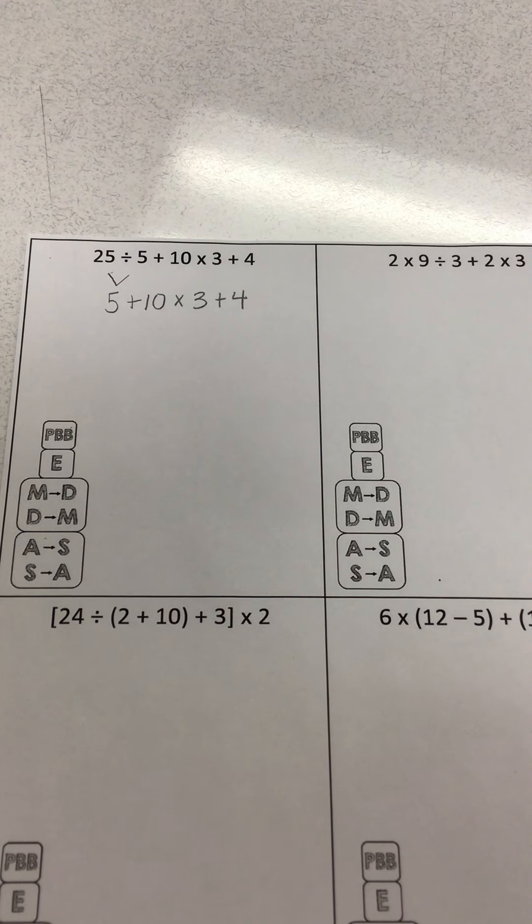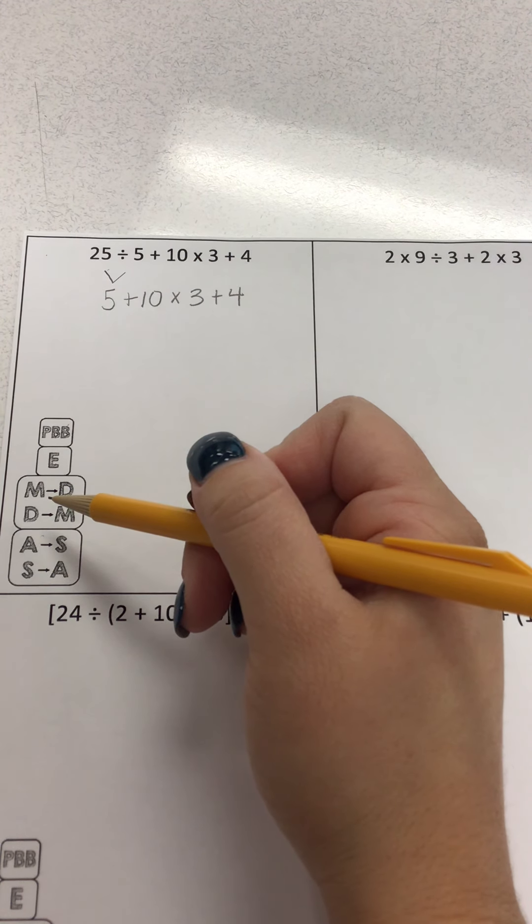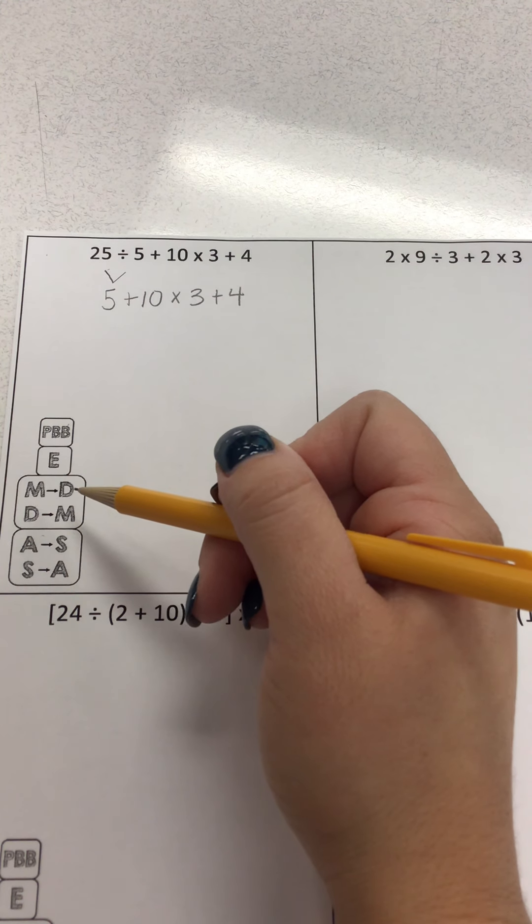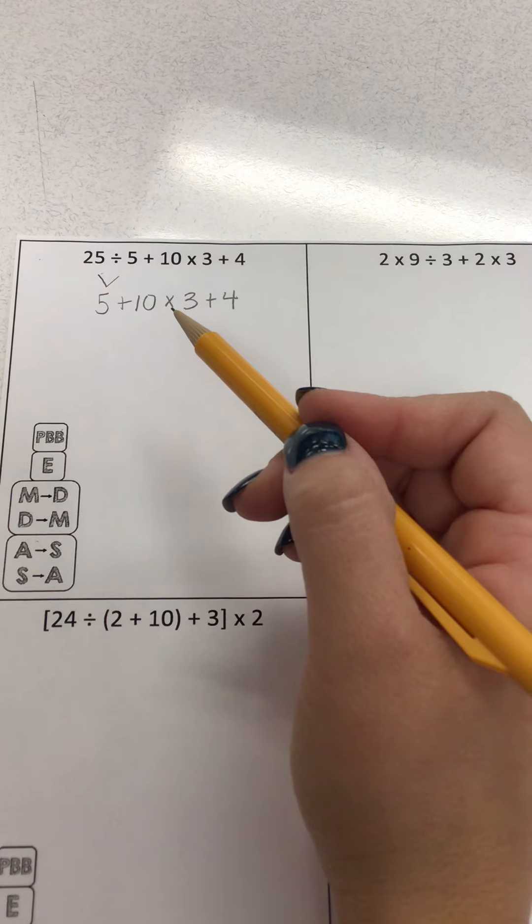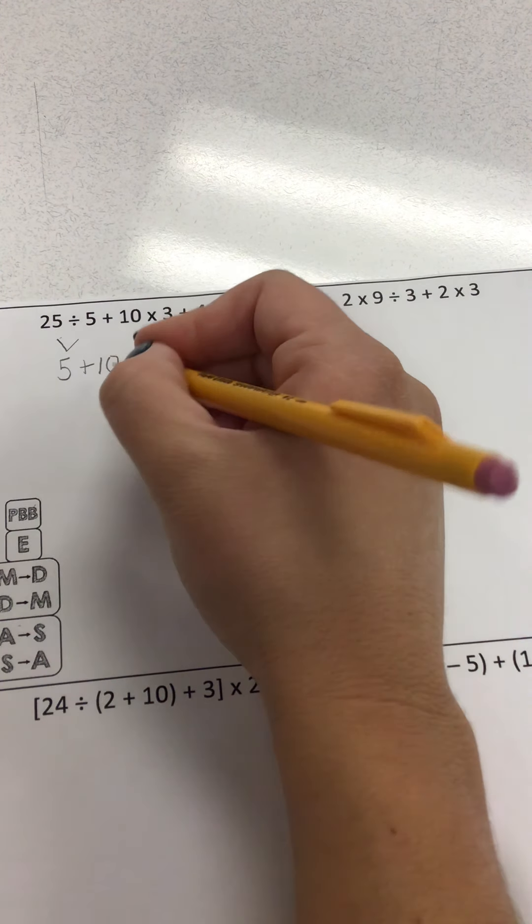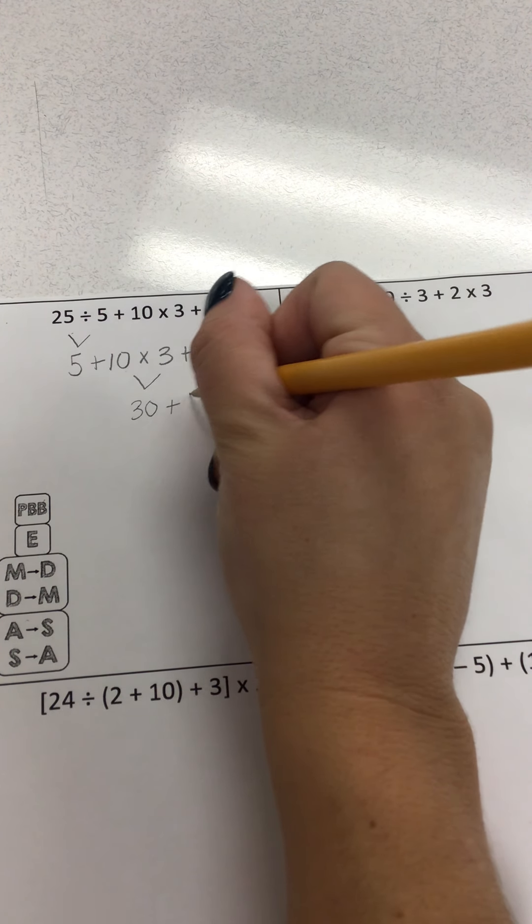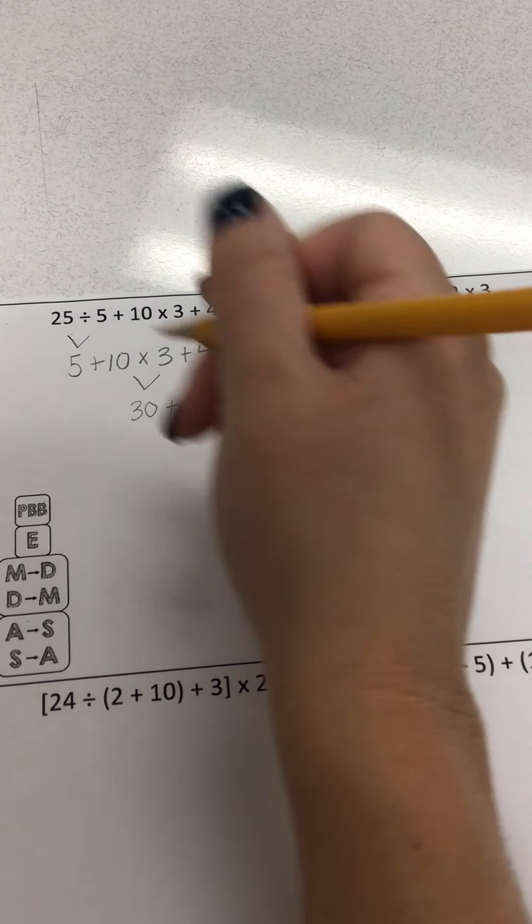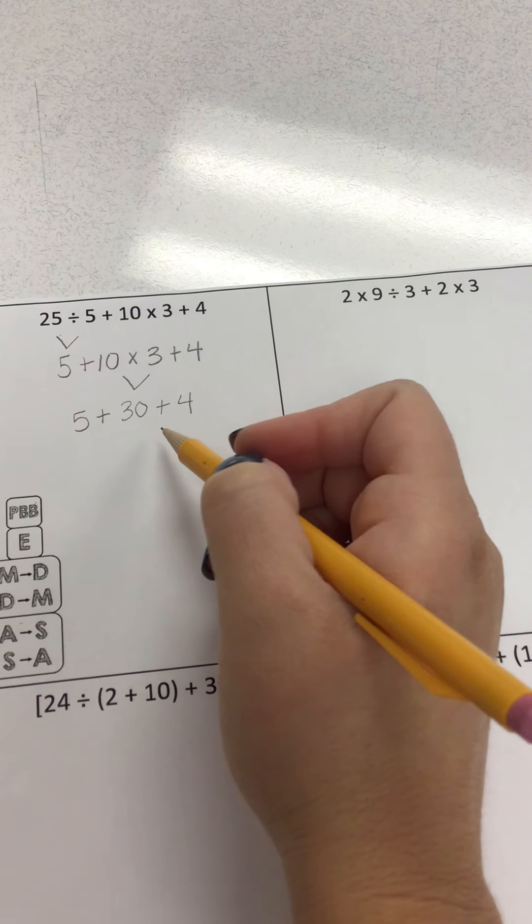Now, what comes next in the order of operations? I don't have any more division, but I do have a multiplication. And that's next in the order of operations. So I'm going to do the same thing. I'm going to solve it. 10 times 3 is 30. Then I drop down the plus 4 that is behind it. I drop down the 5 plus that is in front of it.